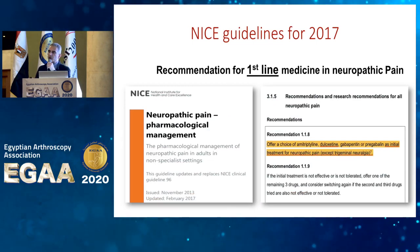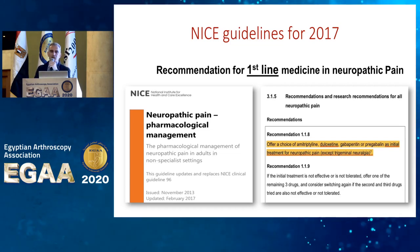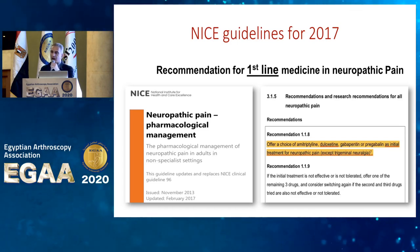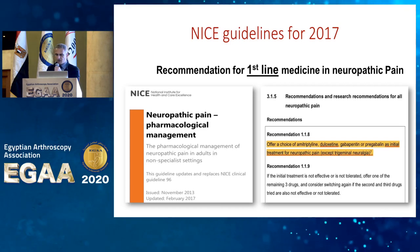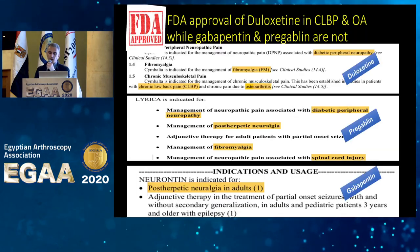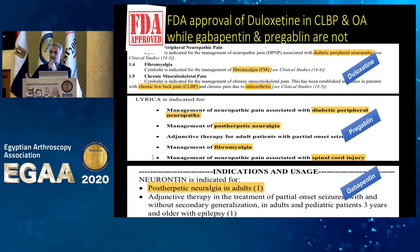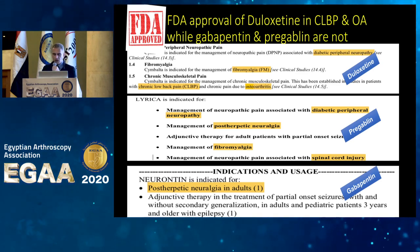Looking at the NICE guideline for neuropathic pain — covering patients with osteoarthritis, low back pain, and those with peripheral neuropathy or other pathologies causing neuropathic pain — duloxetine has been recommended by NICE, the National Institute of Clinical Excellence in the UK, along with other medications for patients with neuropathic pain or peripheral neuropathy. So it has a role in patients with osteoarthritis, low back pain, and neuropathic pain, and is approved for use in these groups.